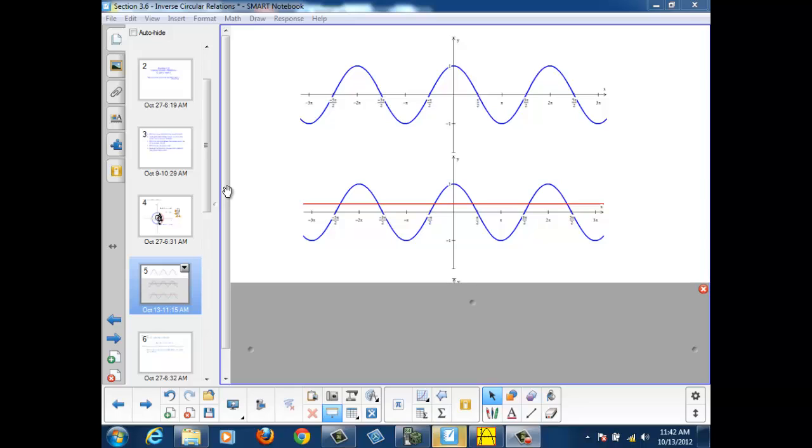If I draw a line here at 0.3, we can see that there are an infinite number of times when 0.3 is equal to the cosine of x.